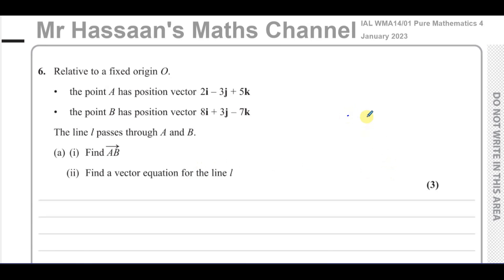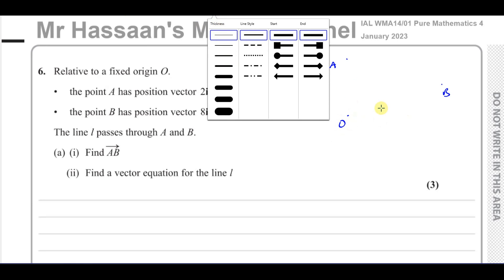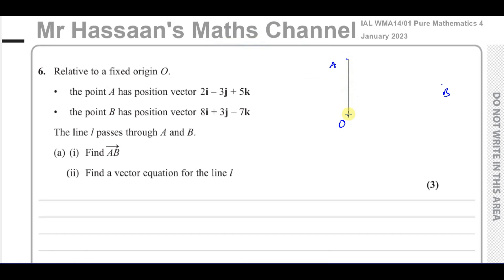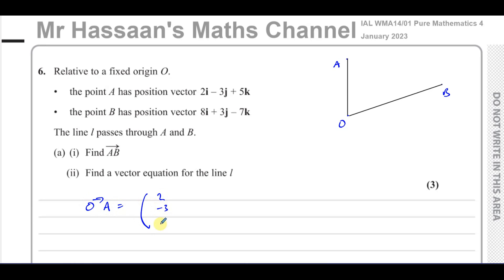If this is our origin O, this is point A, and this is point B — we can't draw them accurately because it's a three-dimensional diagram which is very difficult to draw in two-dimensional space. When it says the position vector of A, that means in relation to the origin — the vector from O to A — so OA is (2, -3, 5), which is 2i minus 3j plus 5k. I like to write them in column vector form for calculations. And the position vector of B means the vector OB, which is 8i plus 3j minus 7k.